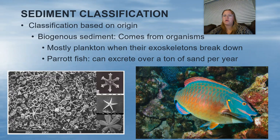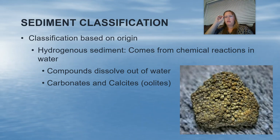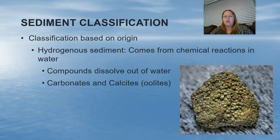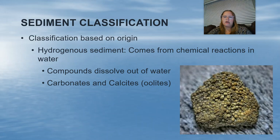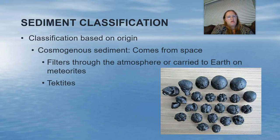The third type of sediment based on classification is hydrogenous sediment — 'hydro' meaning water. This comes from chemical reactions within the water, where compounds dissolve out of the water. Examples include carbonates and calcites. This picture here is an oolite, which is dissolved chemicals out of water creating calcium and calcite ions.